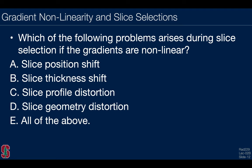Let's think about a question. Which of the following problems arises during slice selection if the gradients are nonlinear? Do we have a slice position shift? A slice thickness shift? A slice profile distortion? A slice geometry distortion? Or all of the above? And the answer is all of the above are possible.